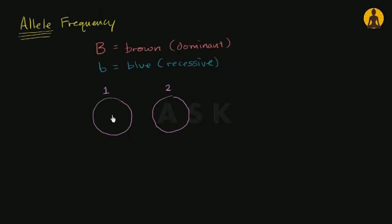So person one, let's say, has a capital B allele, has a brown allele and a blue allele. While person two has two blue, two blue alleles.